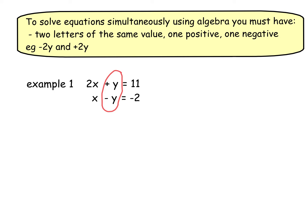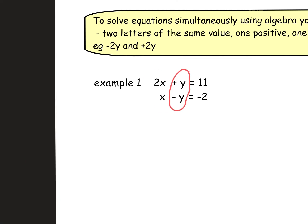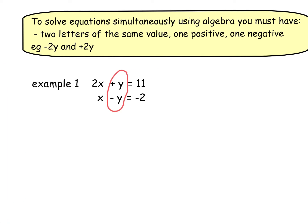Some teachers will tell you to get the x's, the first term the same, but I just use the exact same method and my pupils always use the middle terms because it's a consistent approach. So this one is already good to go. What happens is if we get those two middle terms — one plus and one minus — and treat it as a big add sum, then these terms will be eliminated.